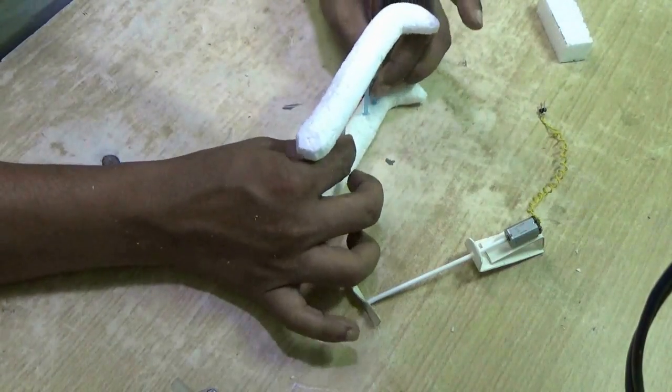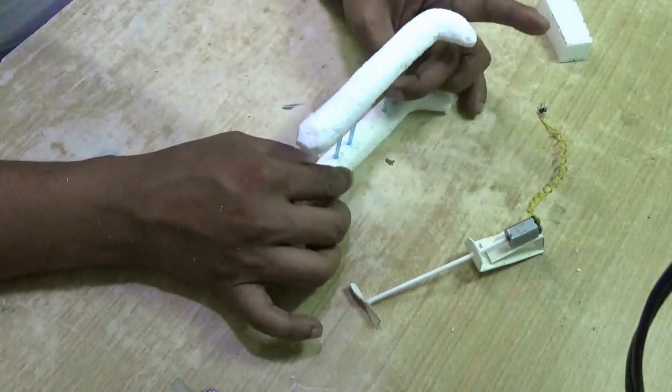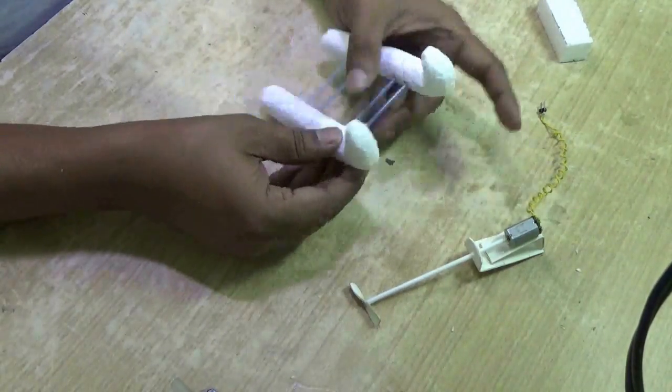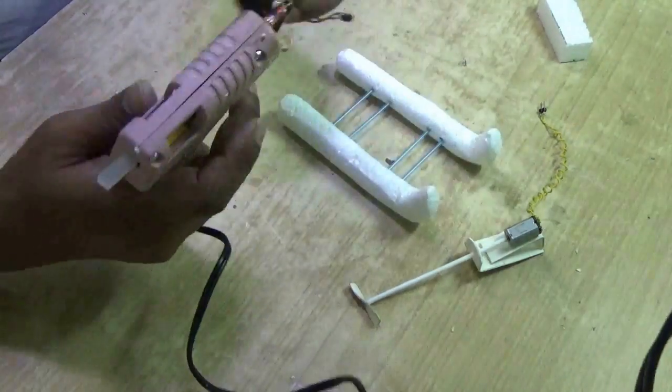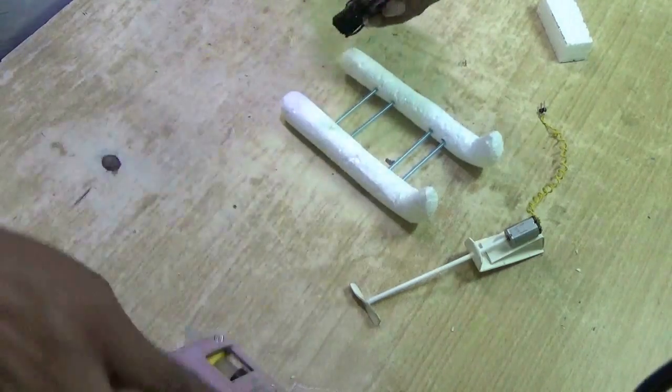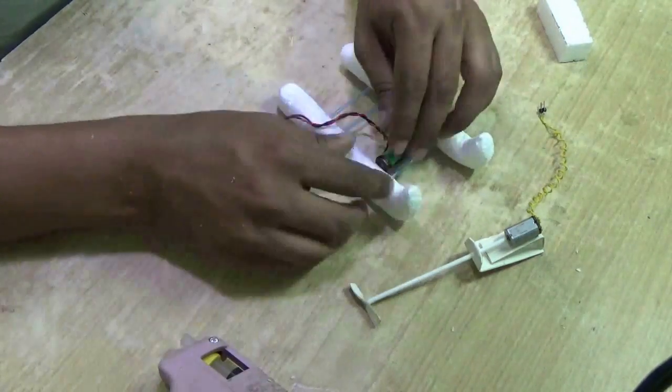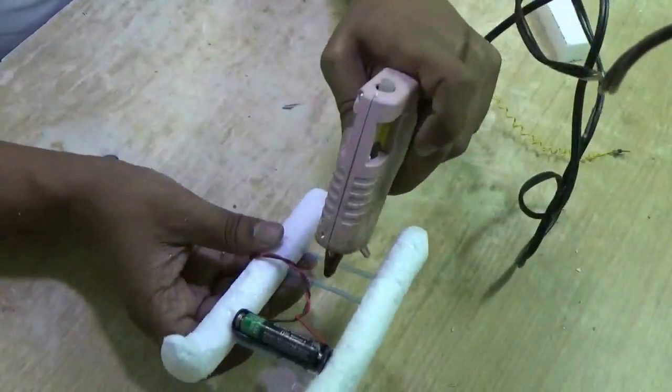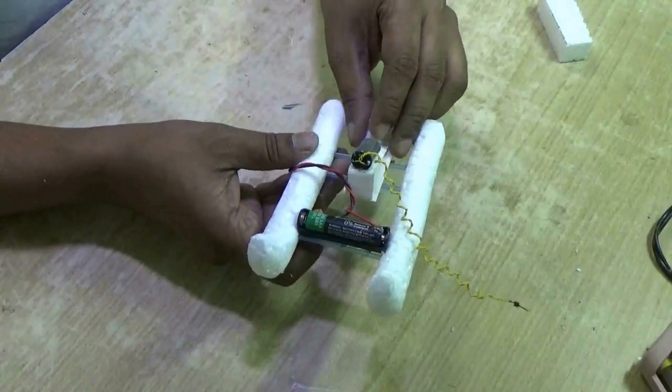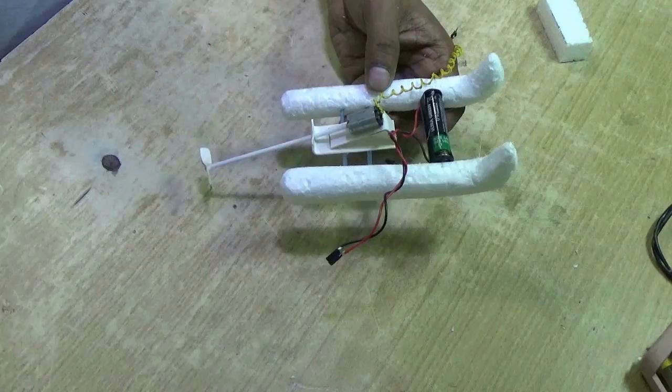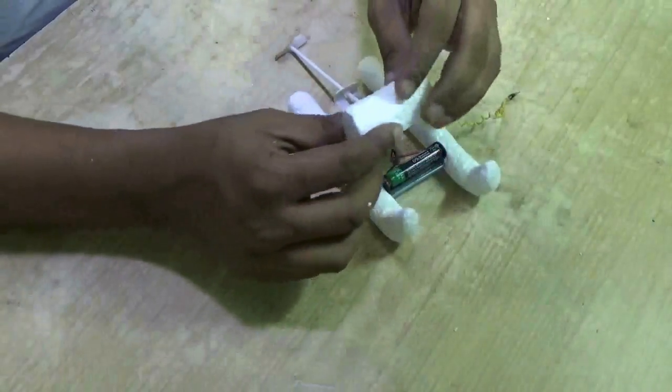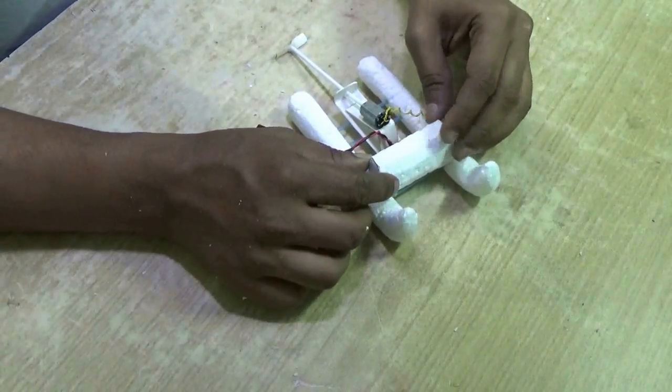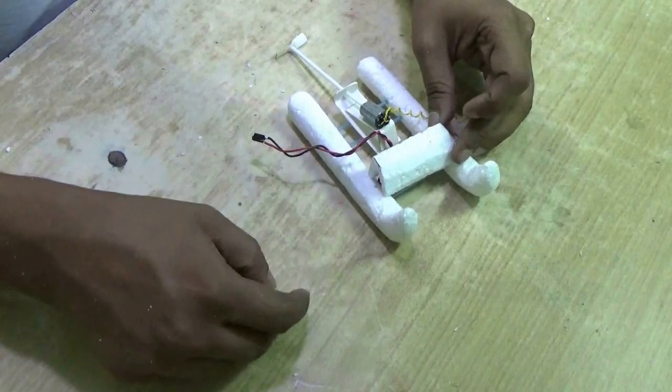Now we are going to press those four pipes onto the other float. Stick the battery with hot glue on the first two pipes and the motor on the second two pipes. Thus the boat is ready.